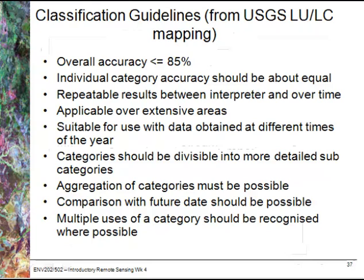Looking at some classification guidelines from USGS, we're looking for an overall accuracy of greater than or equal to 85%. It's also important to ensure that individual class accuracies are roughly equal — you don't want one class close to 100% while another is down at 20%. It's also important to get repeatable results between different interpreters and over time, and that your key is applicable over extensive areas, not just for one photo.